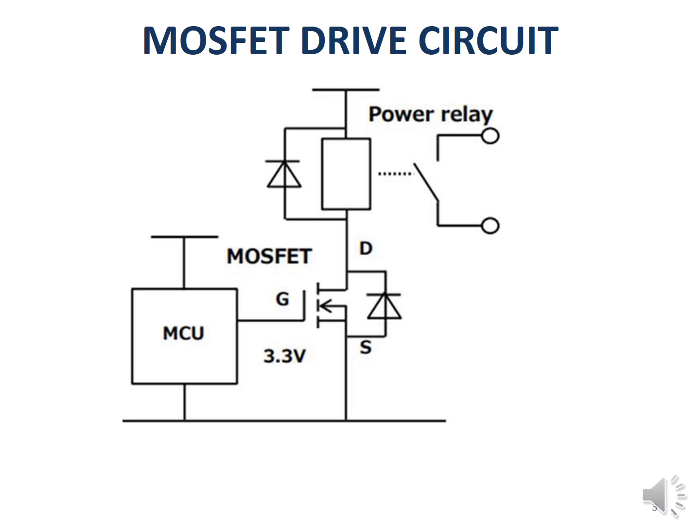The turn-on process of the MOSFET is based on the threshold voltage. The threshold voltage is the minimum gate voltage required to turn on the MOSFET. By properly applying a gate voltage of nearly 3.3 volts, the MOSFET can be turned on easily.